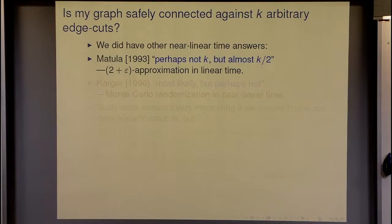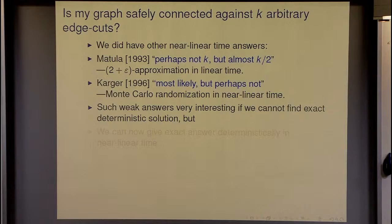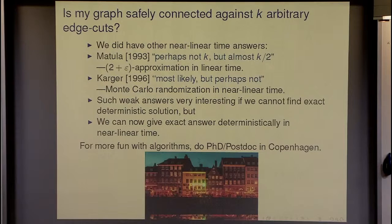We did have other near-linear time answers: approximation algorithms give a 2-plus-epsilon approximation; Karger's Monte Carlo gives 'most likely yes but perhaps not'. Here we get the exact deterministic solution. For more fun with algorithms, come do a PhD at the post in Copenhagen — I have one position coming up next year for two years. Thank you.